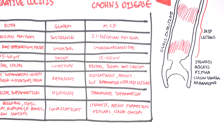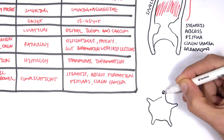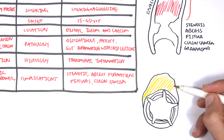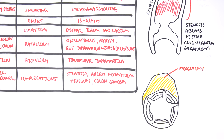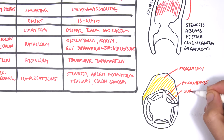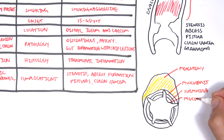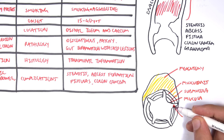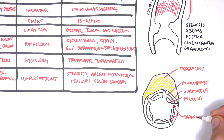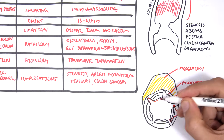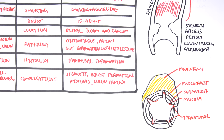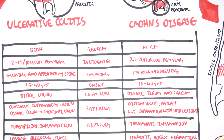Taking a cross-section of the small intestine, we can see the mesentery, the muscularis, the submucosa, and the mucosa. In Crohn's disease, all the layers are affected — it is a transmural inflammation — and so complications can be quite serious, including perforation and fistula.